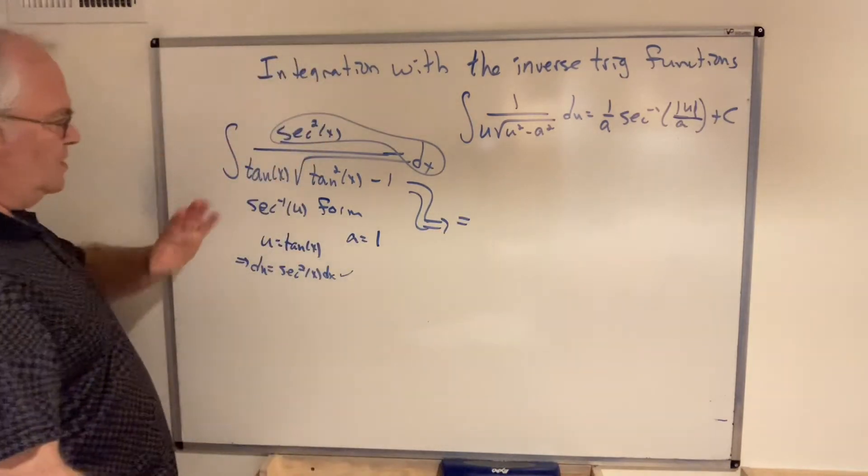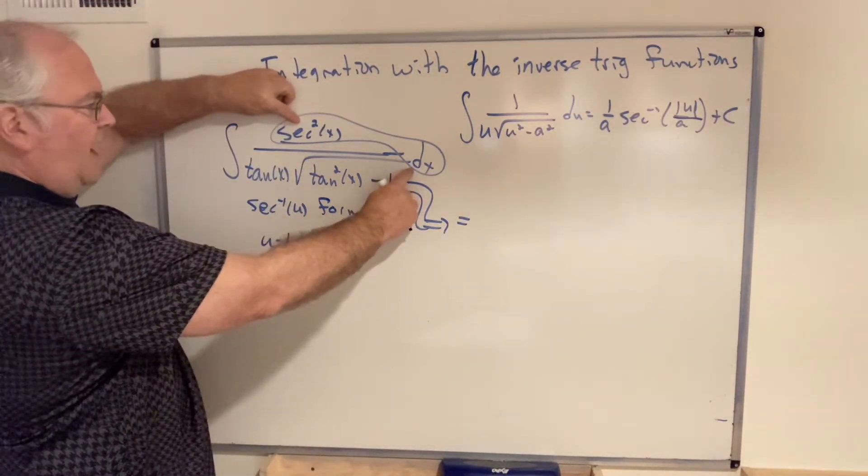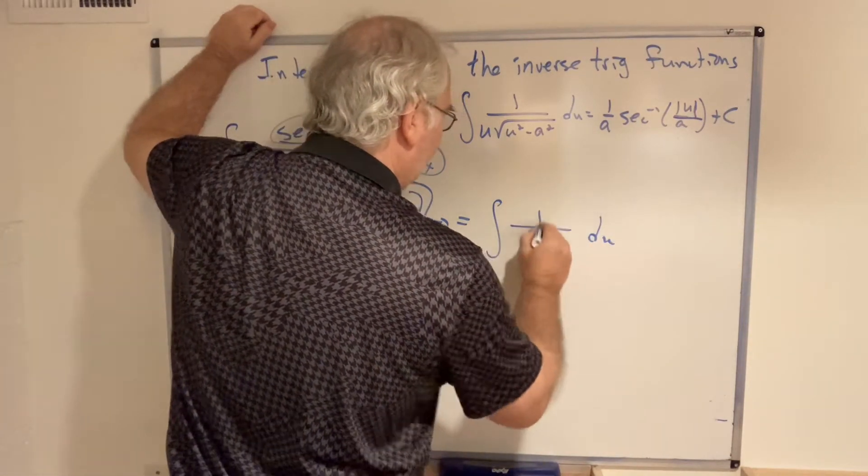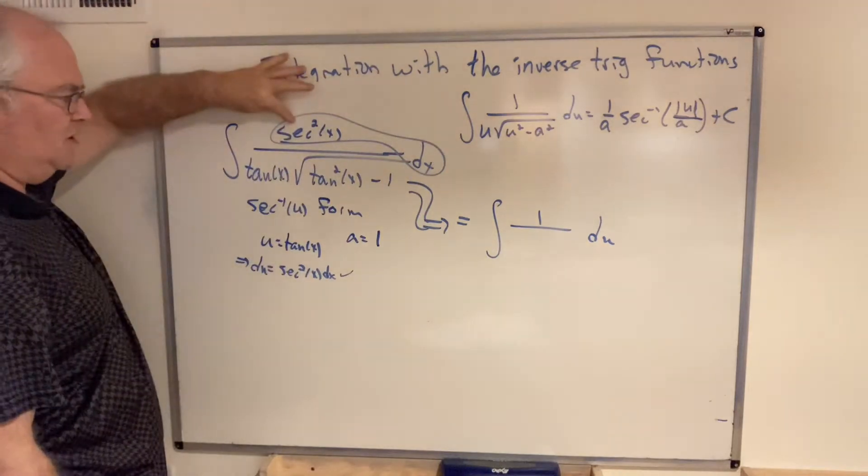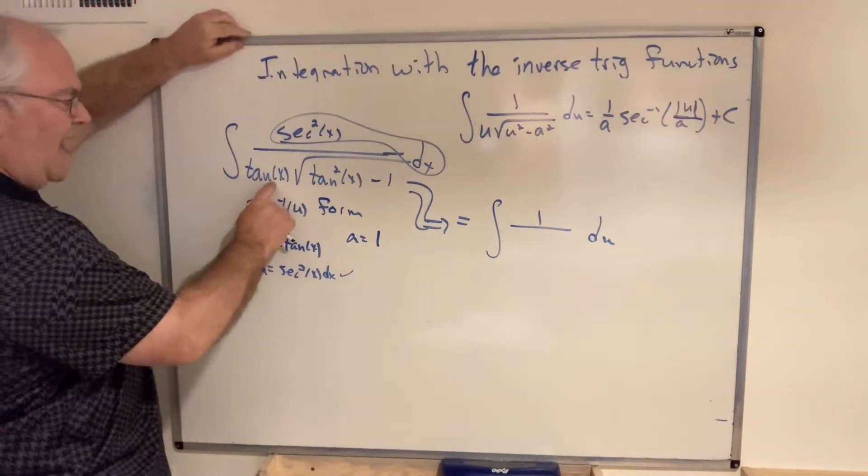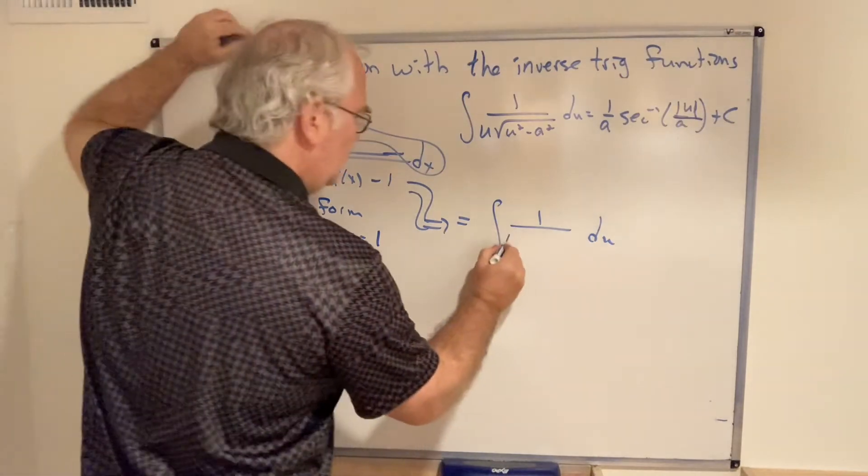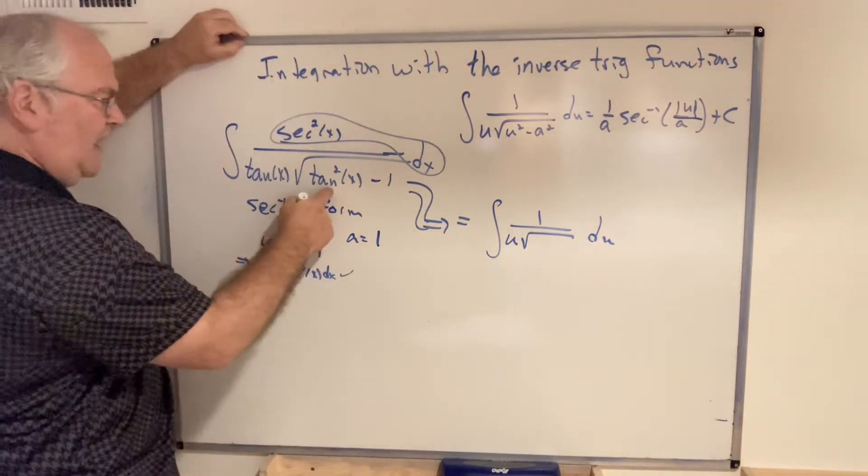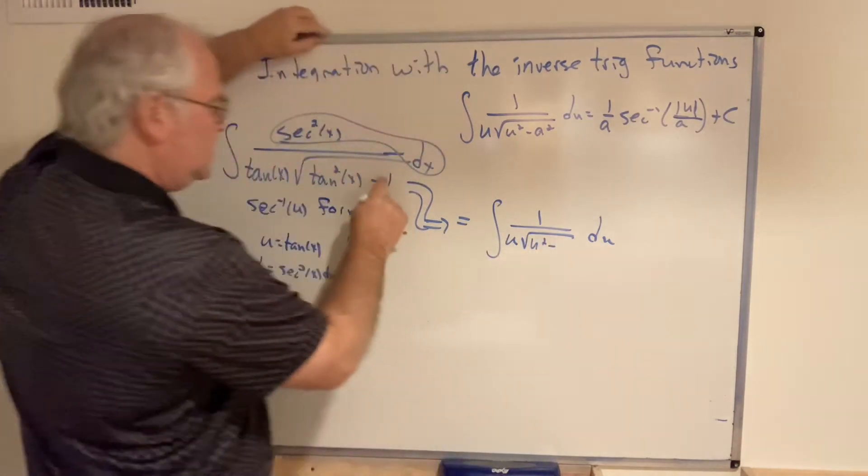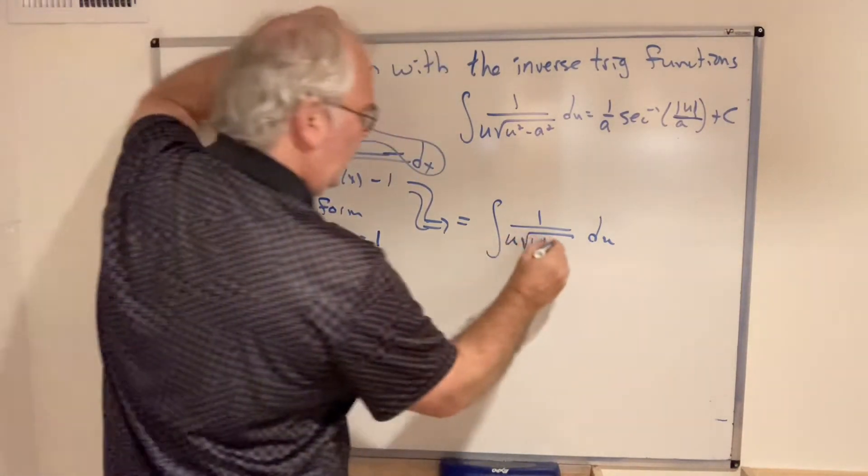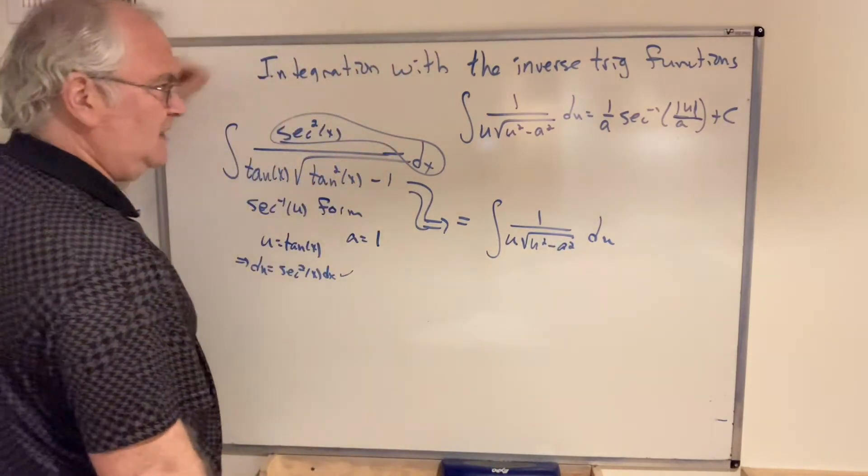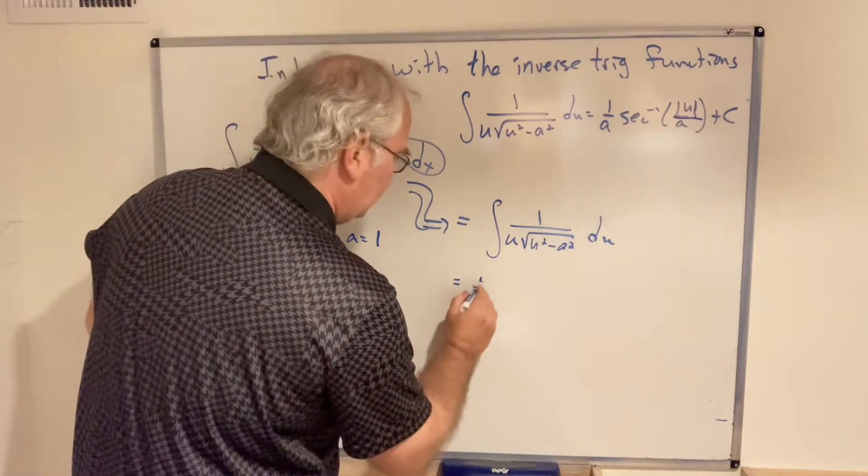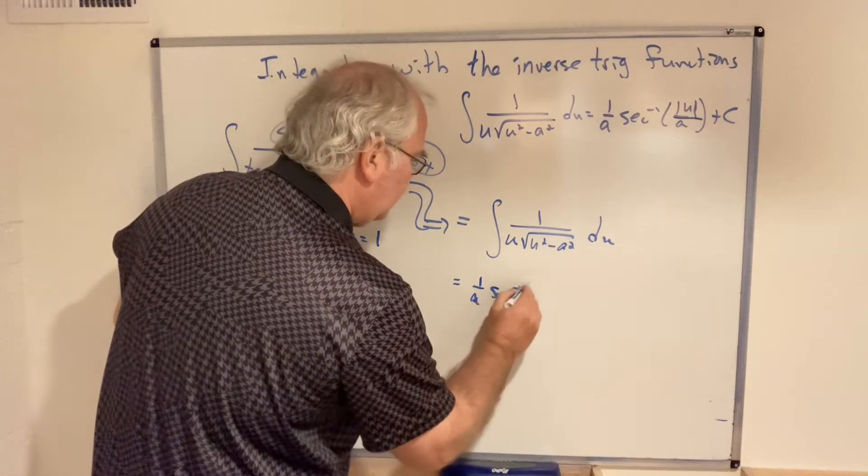And so this is equal to—just replace everything. Sec²(x)dx translates as du and we have 1 in the numerator because everything vanishes. Now notice tan(x) is u outside the square root. Inside the square root we have tan² which is u² minus 1 which is a². And so this is precisely the secant inverse form. Write out the answer of the secant inverse form: 1 over a secant inverse.